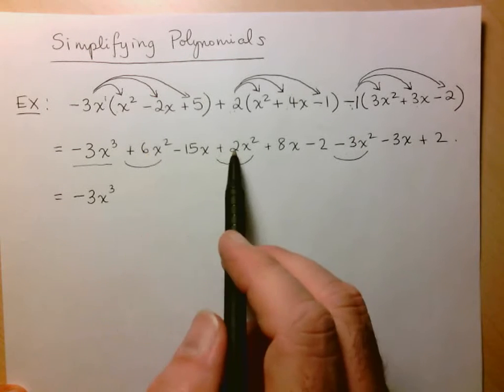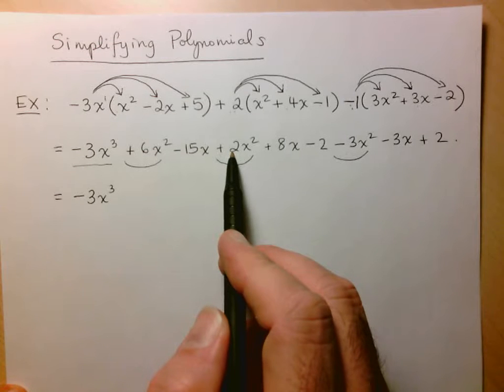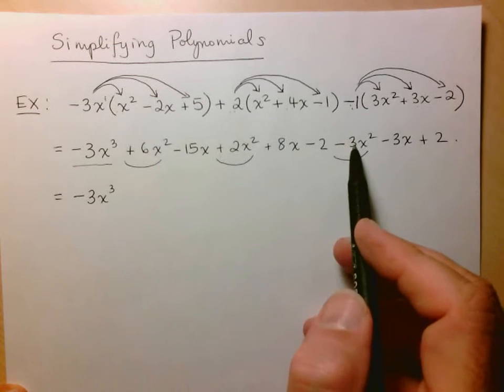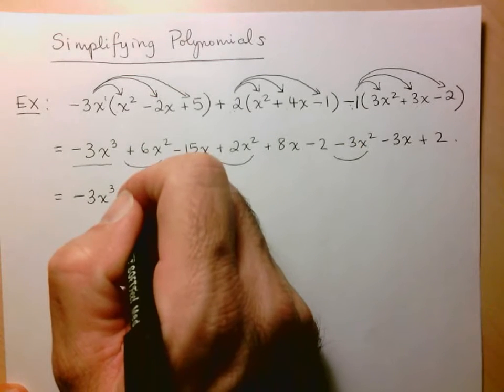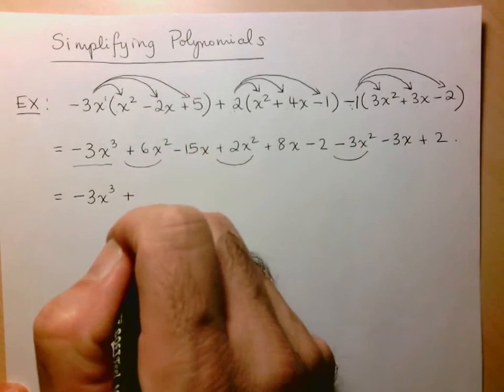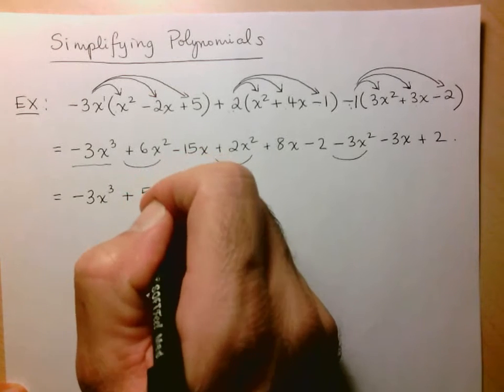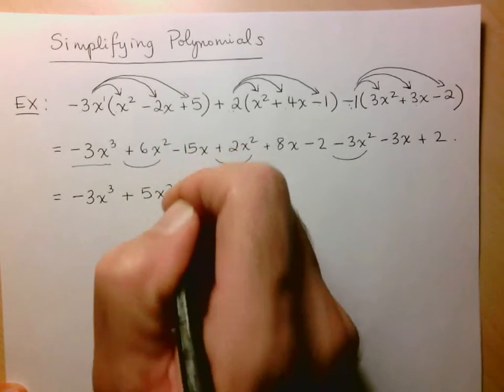So now I can simplify these three terms together. 6x squared plus 2x squared gives me 8x squared. And then minus 3x squared, 8 minus 3 is 5. And since it's positive 5, it becomes plus 5x squared.